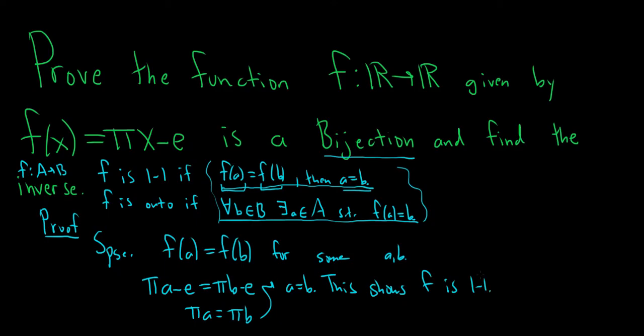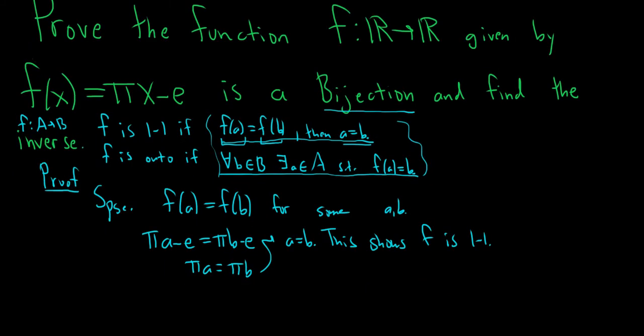Now we have to show it's onto. To show it's onto, we have to start by taking some little b in capital B. Then we have to show there's an a in capital A such that f(a) = b. Capital A and capital B are the same in this problem. They're both the set of real numbers. Before I write the proof for this, I'm going to come to the side over here and just do some scratch work.